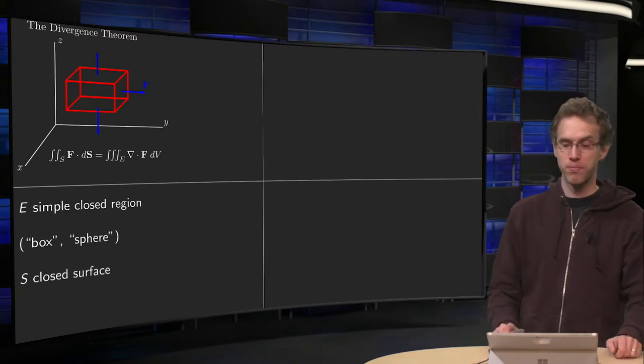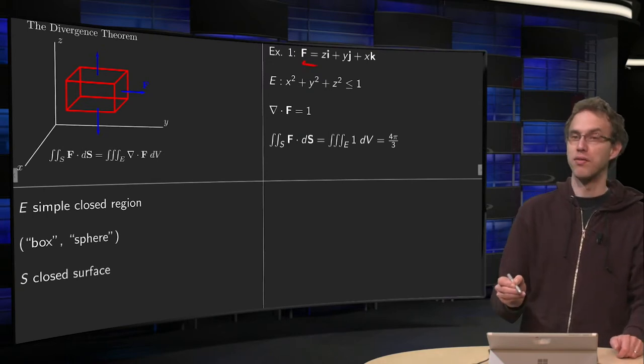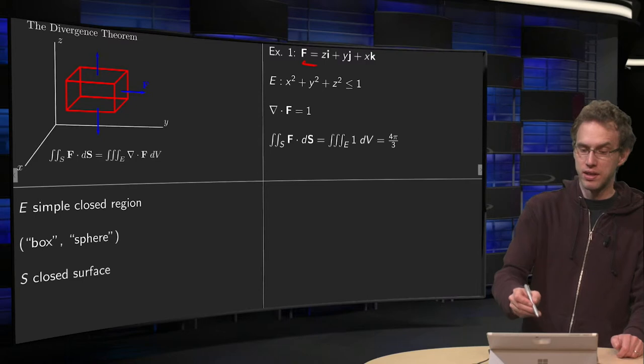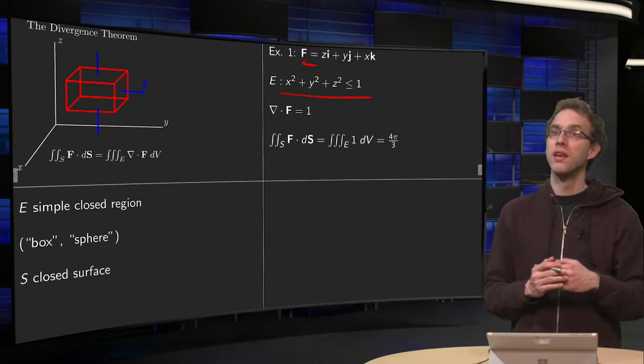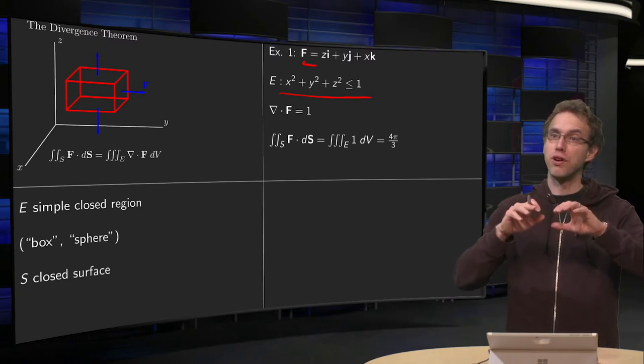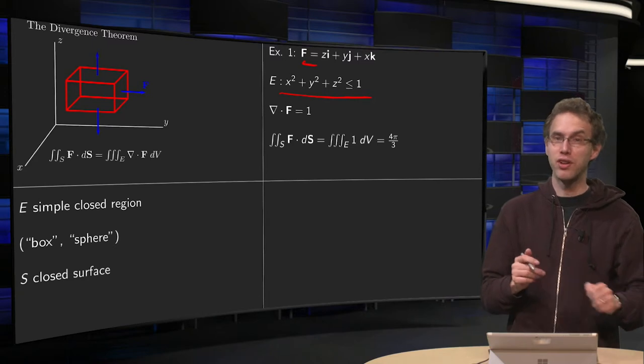Now let's do an example. For example we have the vector field capital F over here, and E the solid will be the unit sphere. Now then we can compute the flux of F through the surface, but it is easier to use the Divergence Theorem.